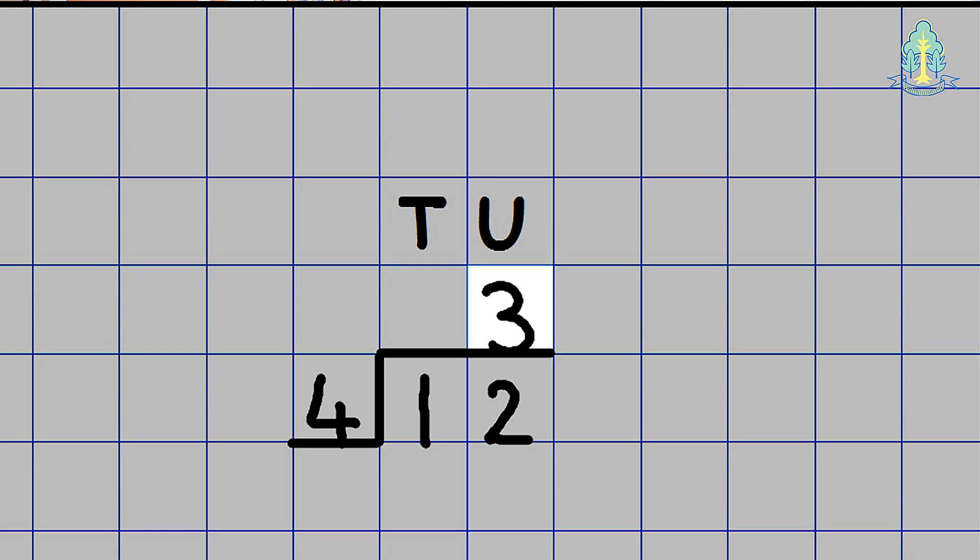It is important at this point that children know that the calculation is set out in columns: a tens column and the units column. All digits must stay in the correct column. So in this example the answer 3 sits above the 2 and in the units column.